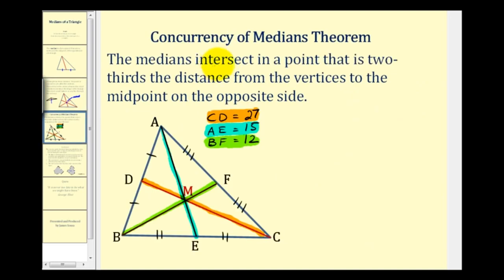Now let's take a look at the concurrency of medians theorem. The medians intersect in a point that is two-thirds the distance from the vertices to the midpoint of the opposite side.